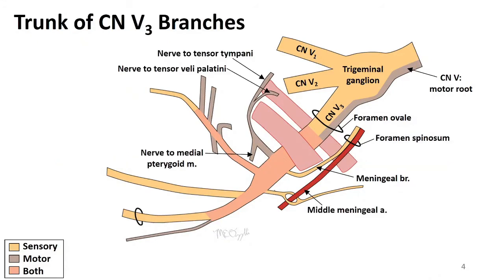Starting with the trunk, directly off it we see many branches. One is the nerve to the medial pterygoid. We also find the nerve to the tensor veli palatini and the nerve to the tensor tympani coming off the trunk. Together we also see the meningeal branch, which re-enters the cranial cavity through the foramen spinosum, supplying sensory innervation to that area.